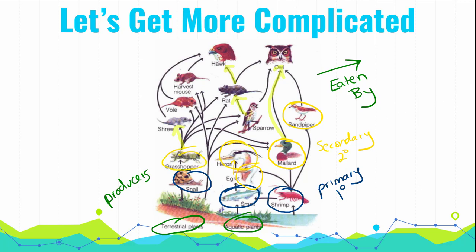And finally, everything that eats a secondary consumer is a tertiary consumer, which we write as a three in a little circle. So shrews, moles, mouse, hawk, owl, rats, and sparrows are all tertiary consumers.